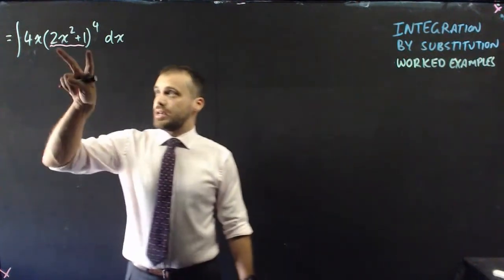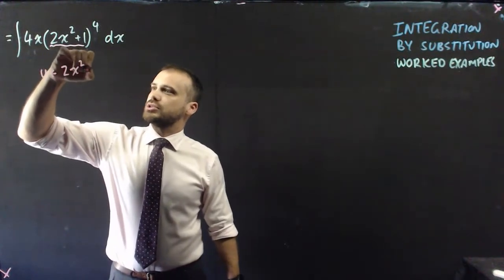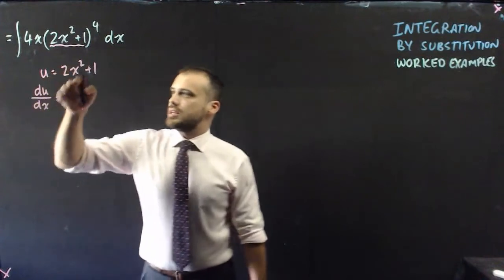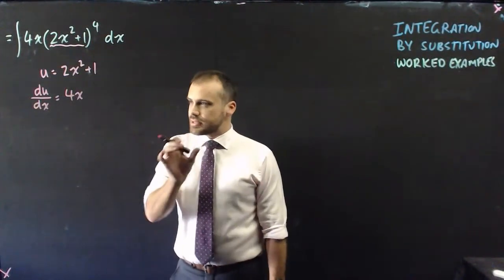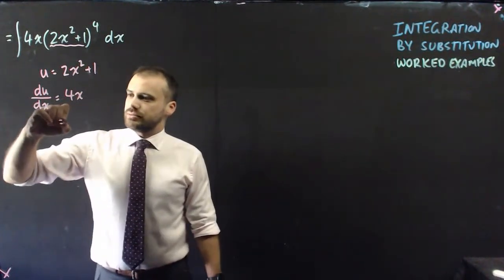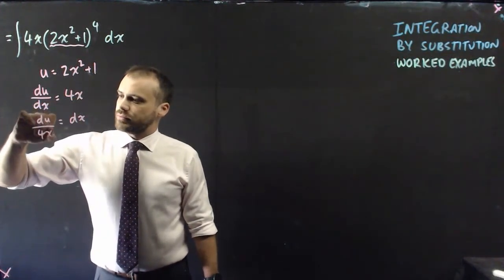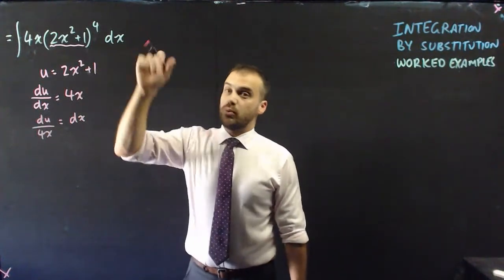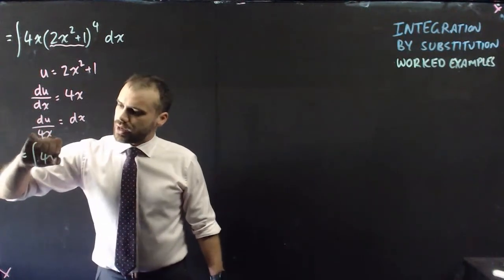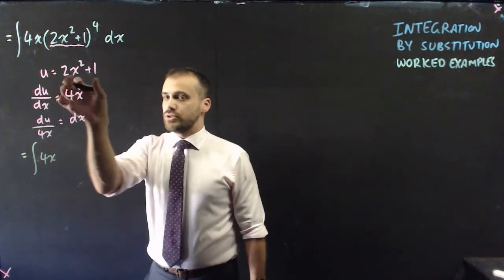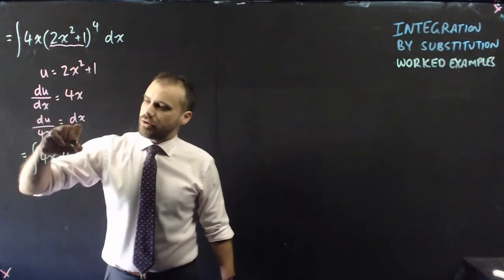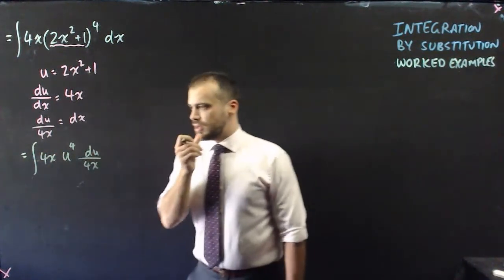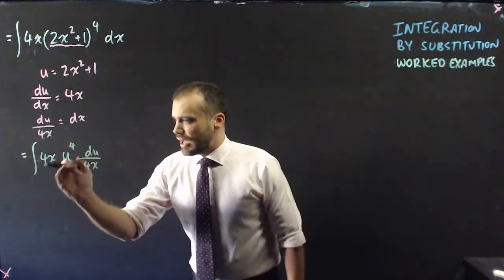Here's our first example. We let u = 2x² + 1. The next step is to find the derivative, so du/dx = 4x. Then rearrange so that dx is the subject: dx = du/(4x). Now we can substitute into the integral: we have ∫4x · u⁴ · du/(4x).